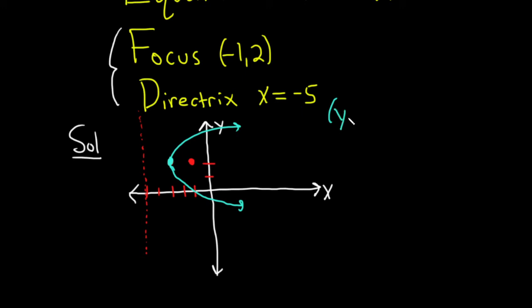So the formula is y minus k squared equals 4c times x minus h. If it had opened up or down the formula would have been x minus h squared equals 4c times y minus k. The x always goes with the h and the y always goes with the k. It's just a trick to remember it.